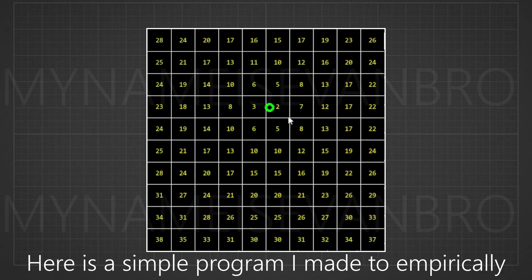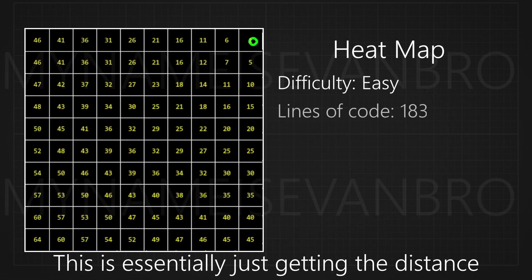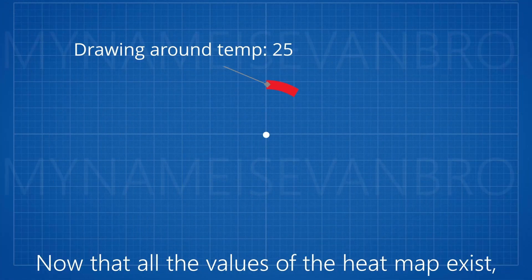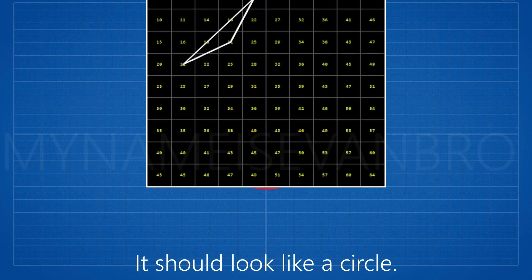Here is a simple program I made to empirically see all the values. This is essentially just getting the distance from the point using the Pythagorean theorem. Now that all the values of the heat map exist, draw a line around a certain temperature or value. It should look like a circle.